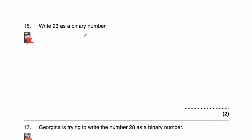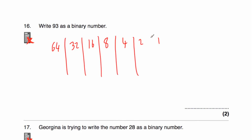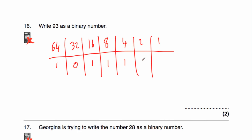Question 16 asks us to write 93 as a binary number. Let's write our columns: 1, 2, 4, 8, 16, 32, 64. Now 128 would be too big, so we've gone far enough. We need a 64. A 32 would give 96 — too big. We use 16, giving 80 (64 plus 16). Add 8 — that's 88. Add 4 — that's 92. No 2, but we need 1 — that's 93. So 93 as a binary number is 1011101.